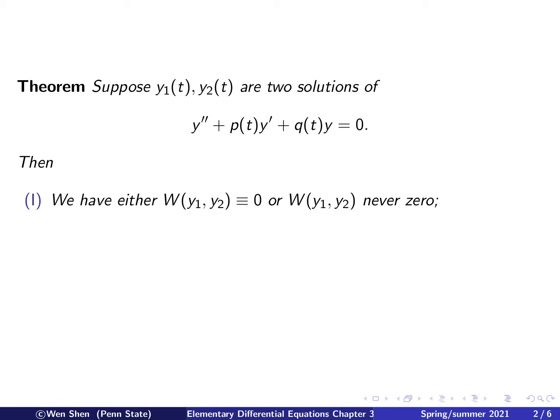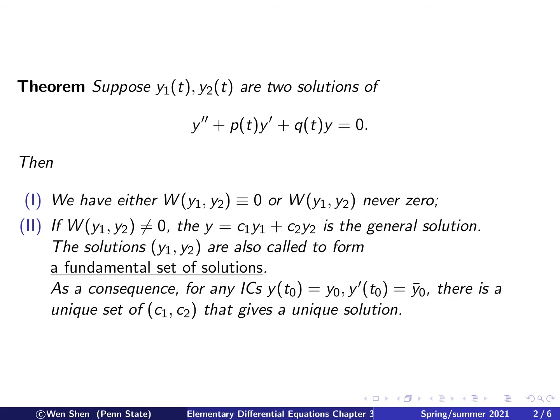So this means y1 and y2 are either linearly independent or linearly dependent. Part 2: in the case where the Wronskian is never 0 — that means y1 and y2 are two linearly independent functions — then we can form the general solution by making a linear combination of these two. So y equals c1*y1 plus c2*y2 is the general solution, where c1 and c2 are two arbitrary constants. This set of solutions y1 and y2, which are linearly independent, are also called a fundamental set of solutions for this homogeneous differential equation.